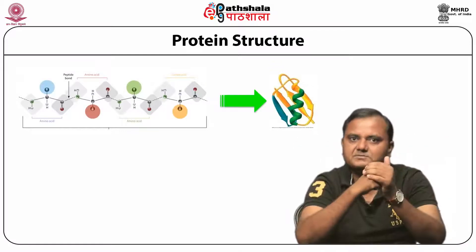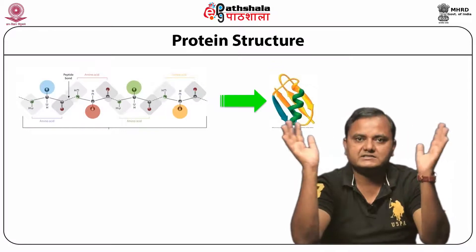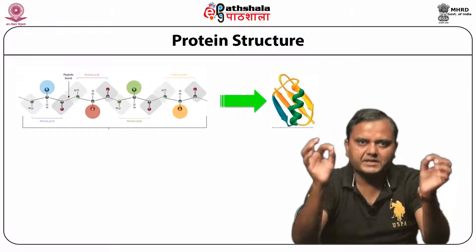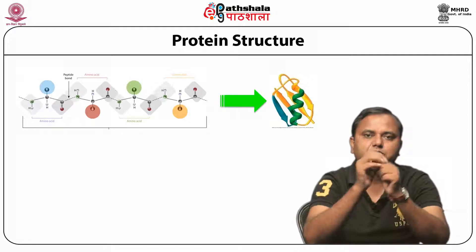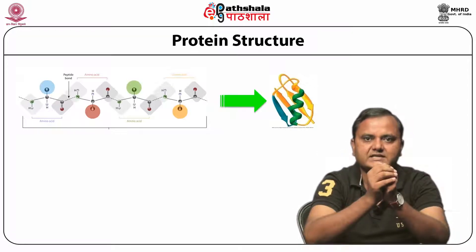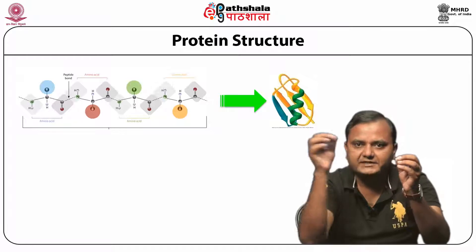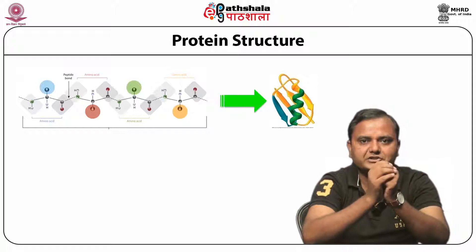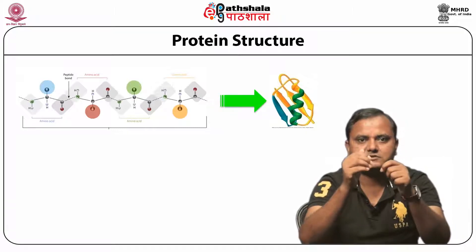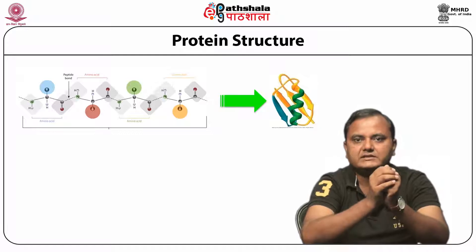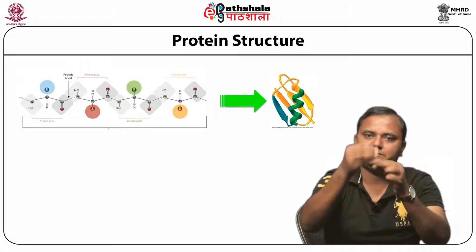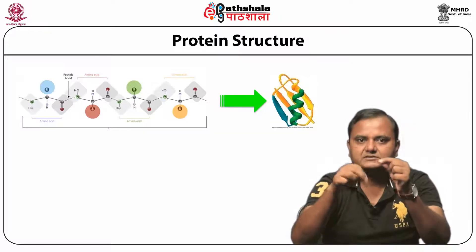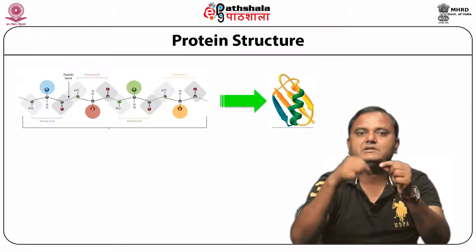First we discuss the three-dimensional structure of the protein. Proteins are made of 20 different types of amino acids linked together in a linear fashion by a peptide bond. The peptide bond allows for rotation, and therefore the protein can fold and orient the R groups into energetically favorable positions.